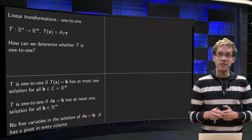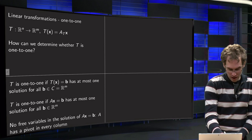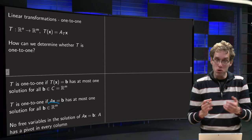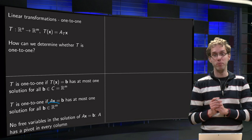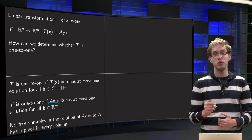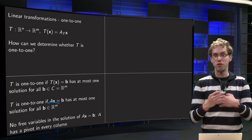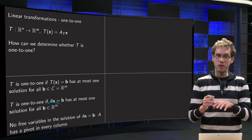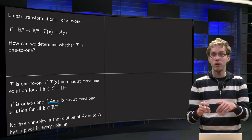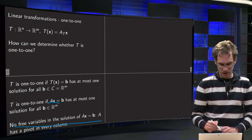So that means T is 1 to 1 if Ax = b has at most one solution for all b in Rm. So if you want to have at most one solution for all b, that means you cannot have free variables. As soon as you have free variables you either have zero solutions or infinitely many, so no free variables in the solution of Ax = b.